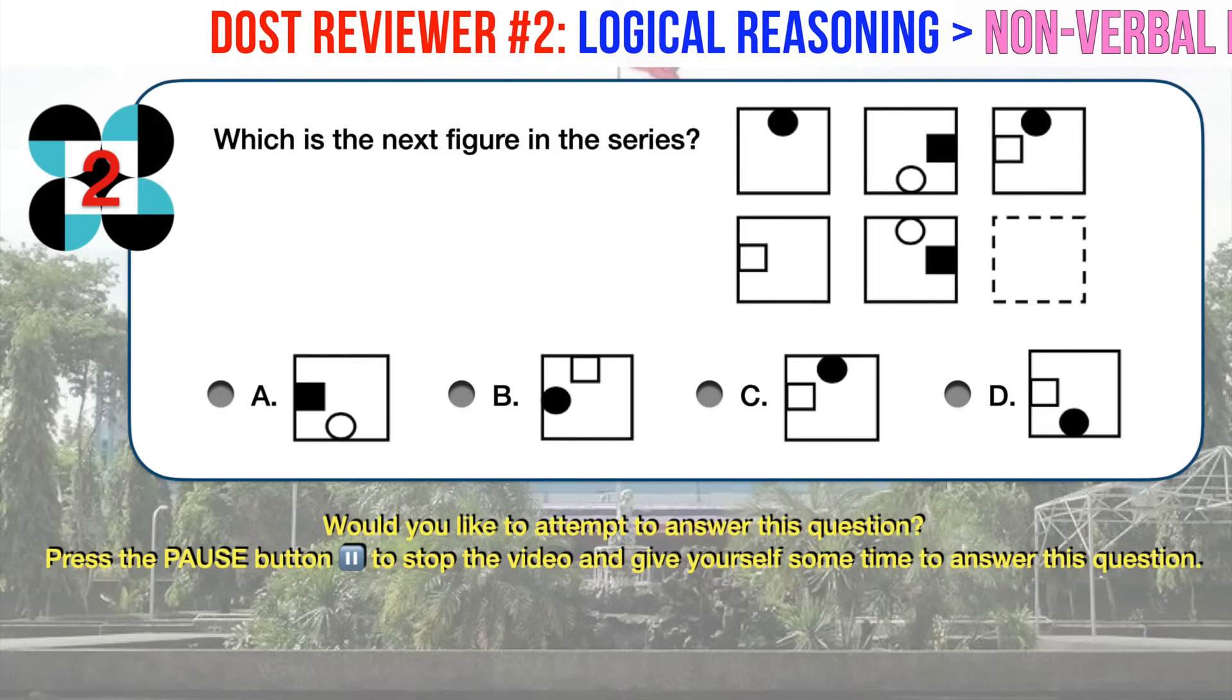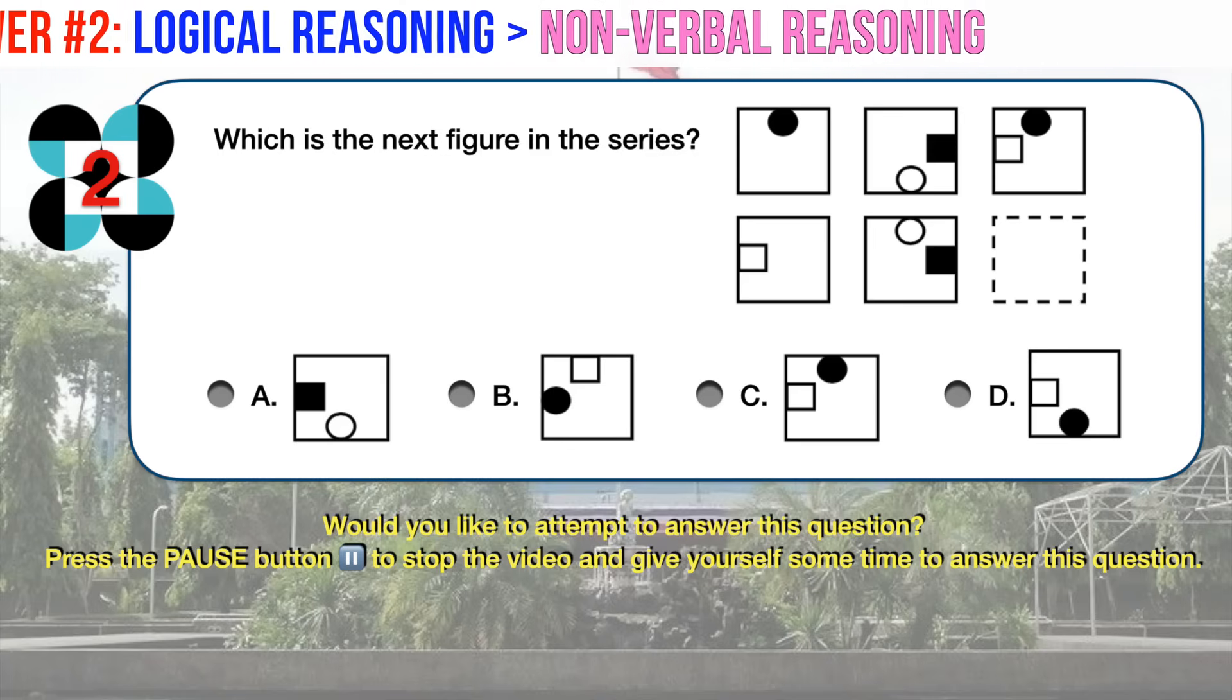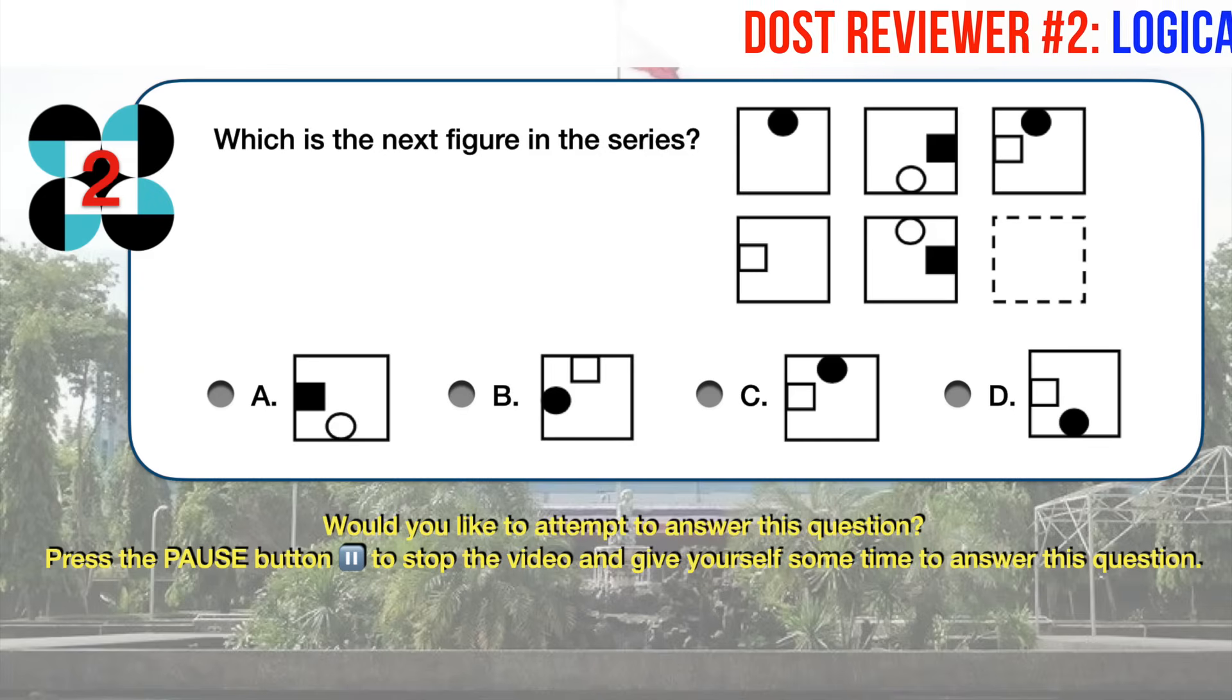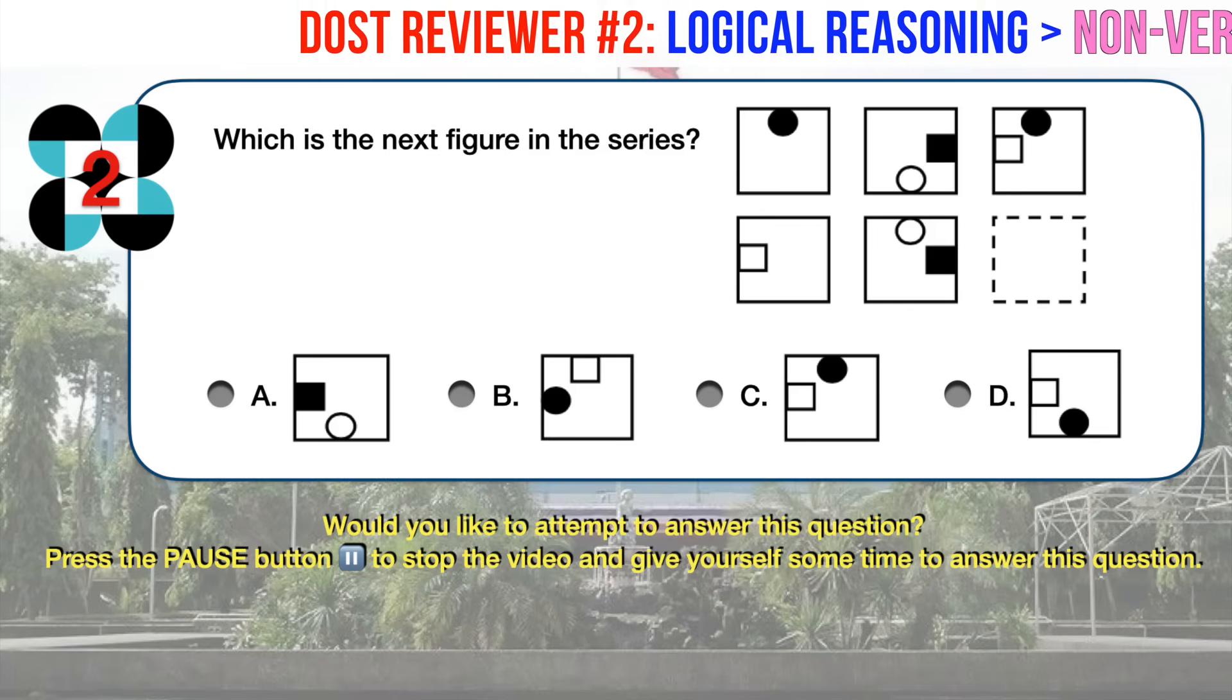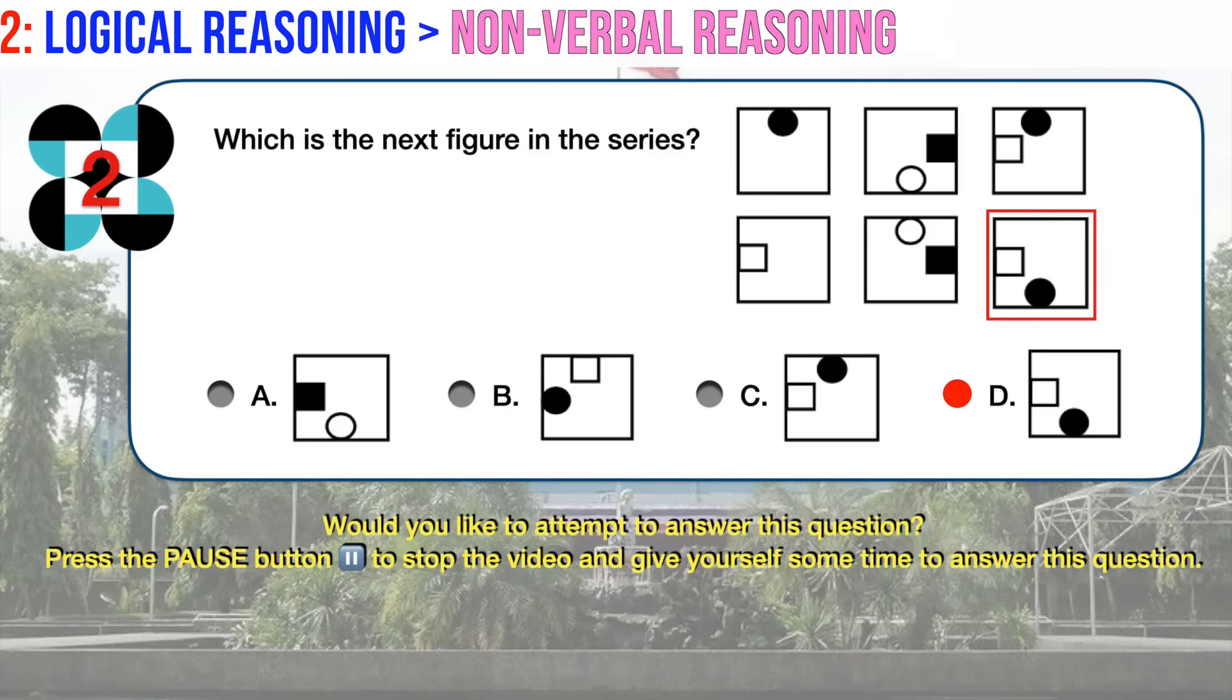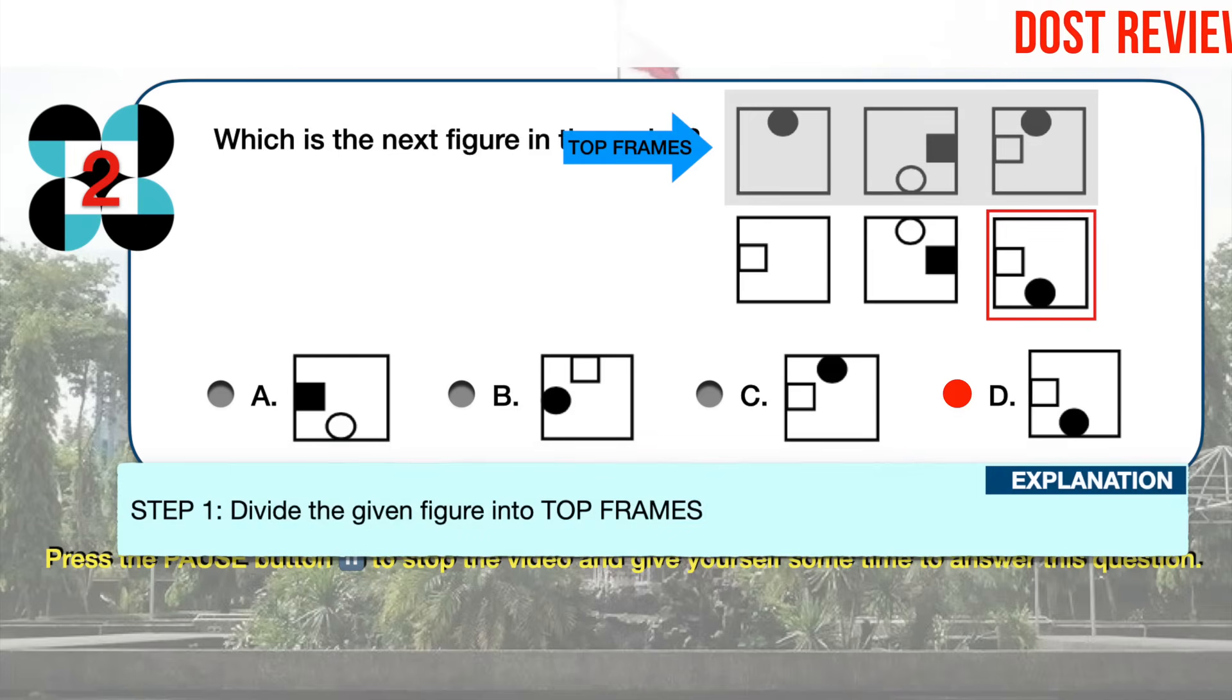Nonverbal Reasoning Number Two. Which is the next figure in the series? The correct answer is D. This is a bit complicated to explain, so please pay careful attention. Pause and rewind if you feel necessary. First, we divide the given figure into top frames and bottom frames.